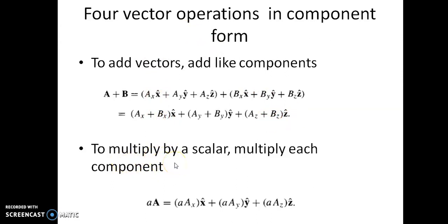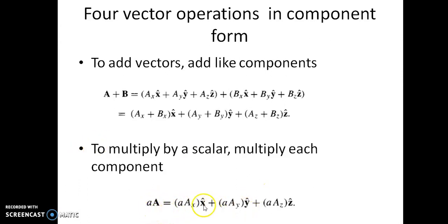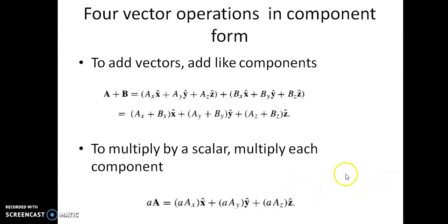The next operation is multiplication with a scalar. In order to multiply a vector by a scalar, we multiply each component. For example, multiplying scalar a with vector A gives a·Ax x-cap + a·Ay y-cap + a·Az z-cap. This is how we multiply a vector with a scalar.